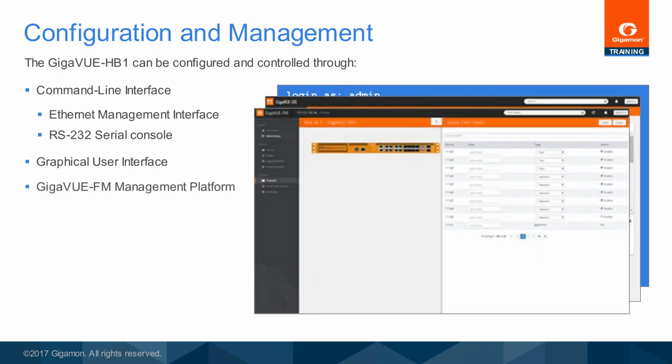The preferred interface is the Gigaview FM or Fabric Manager platform, which is able to provide configuration services as well as asset management and upgrade services, and even various reports, alerts, and graphs for physical and virtual Gigaview nodes and clusters. When automated changes are desired, REST APIs accessible through Gigaview FM can be used to programmatically update node configurations in order to automatically react to changing network conditions.